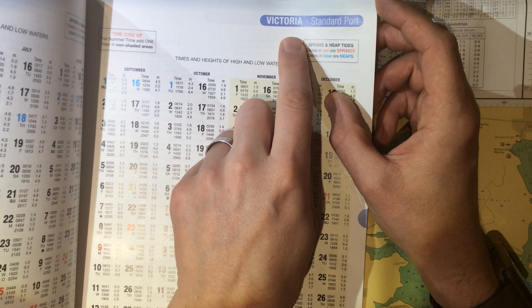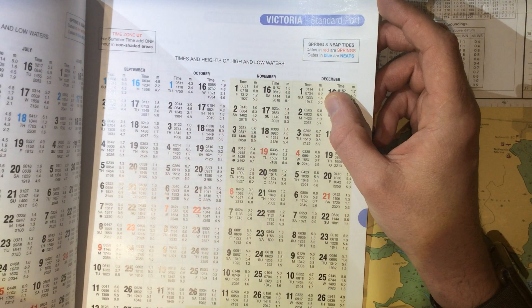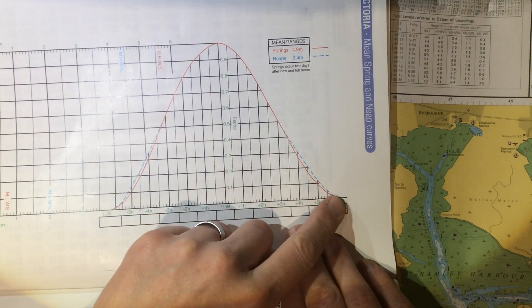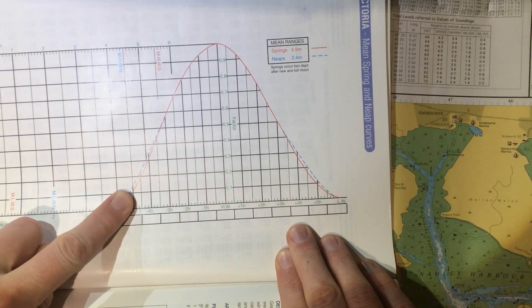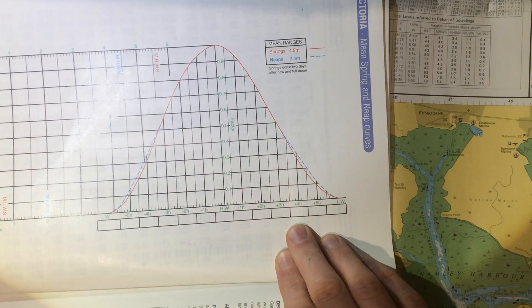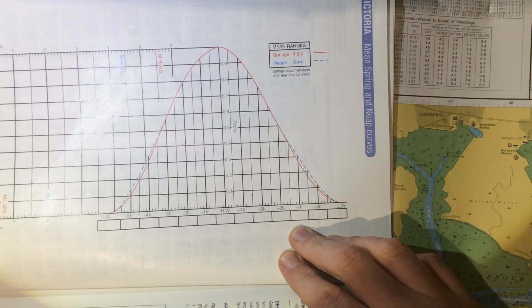Once you've done that, because we're working on Victoria tides, we need to turn to the curve for Victoria. You'll notice that the curve of Victoria goes up towards the centre with high water in the centre of it. In most cases you'll find that tidal curves work this way around.